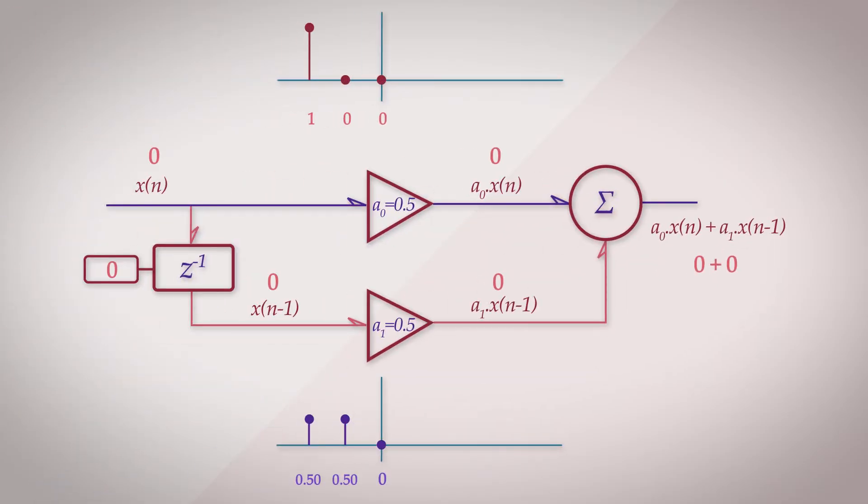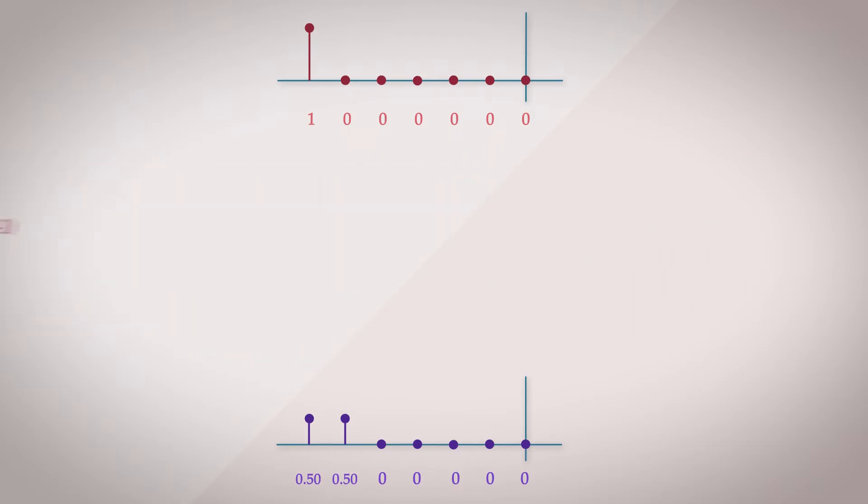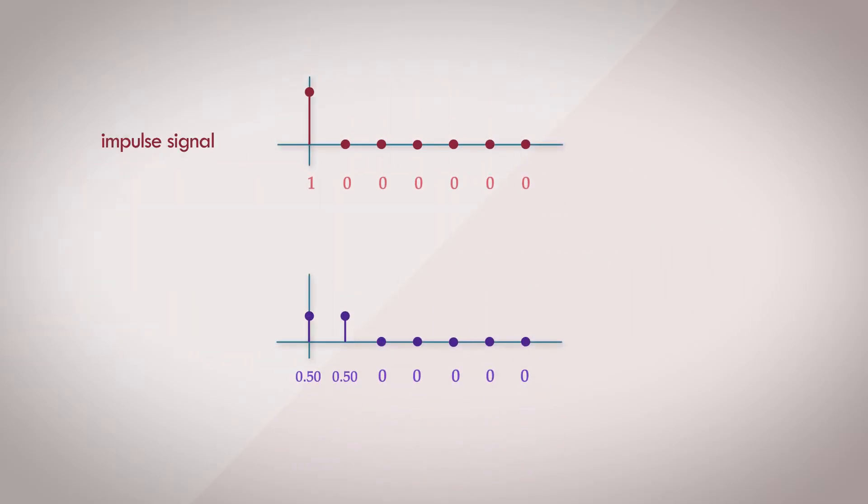After this sample, every other sample would yield the same result of output equal to 0, since the input signal doesn't alter. So for an input sequence with the impulse, we get an impulse response which looks like this. Since there are a finite number of non-zero values that we get in the impulse response, in this case it's only 2, this is regarded as a finite impulse response, or FIR.